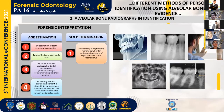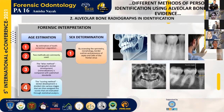Alveolar bone radiographs are used in forensic identification. The forensic interpretation includes age estimation and sex determination. Age estimation is done by tooth cementum angulation using the atlas and scoring method, while sex is determined by assessing the symmetry, morphology, border outline, and presence of septa and cells of the frontal sinus.